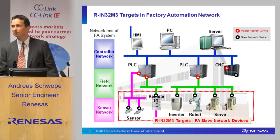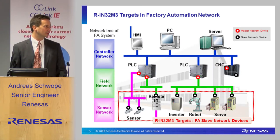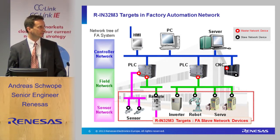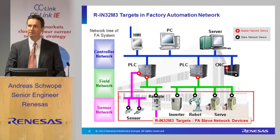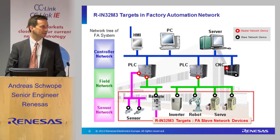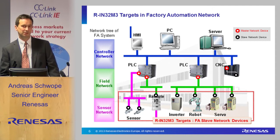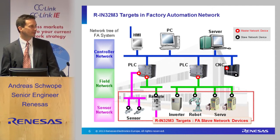When looking at a typical network structure, we have controller network, field network, and sensor network. Performance-wise it goes from high level to low level. The current target of our devices is more located in the sensor network area, meaning intelligent sensors, drives, inverters, and such things.